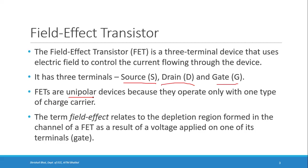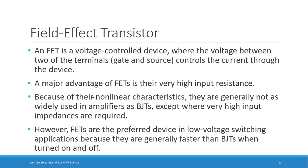The term 'field effect' relates to the depletion region formed in the channel of a FET as a result of the voltage applied on one of its terminals. Whenever a voltage or a field is applied, because of that field there is a depletion region formed in the channel — that's why it is called a Field Effect Transistor. It is a voltage-controlled device, meaning the voltage between the gate and the source controls the current through the device.